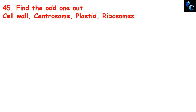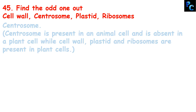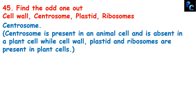Find the odd one out: cell wall, centrosome, plastid, ribosome. The odd one out is centrosome. Centrosome is present in animal cells and is absent in plant cells, while cell wall, plastids, and ribosomes are present in plant cells.